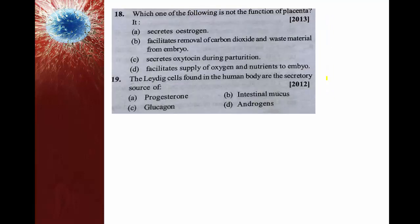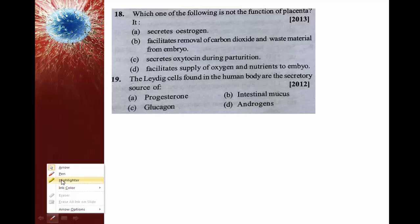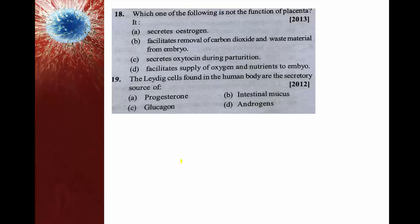Which of the following is not a function of the placenta? The placenta secretes estrogen, facilitates removal of carbon dioxide and waste from embryo, and facilitates supply of oxygen and nutrients to the embryo. The wrong statement is that placenta secretes oxytocin during parturition — oxytocin is actually secreted from the mother's pituitary gland to facilitate contraction of the myometrium of the uterus supporting parturition. So the right answer is option C.